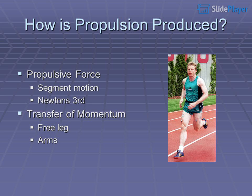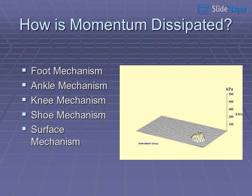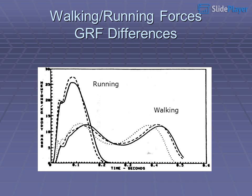How is propulsion produced? Through propulsive force, segment motion, Newton's third law, and transfer of momentum via the free leg and arms. How is momentum dissipated? Through foot mechanism, ankle mechanism, knee mechanism, shoe mechanism, and surface mechanism.